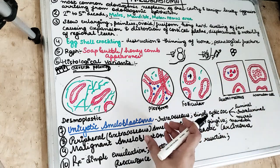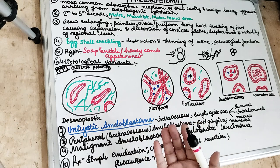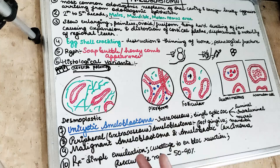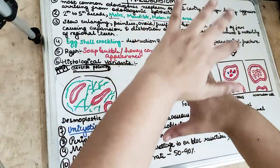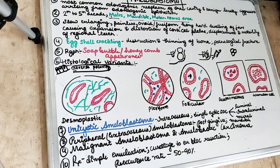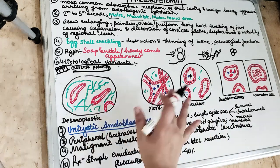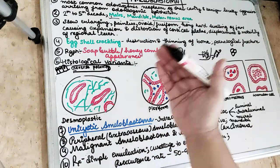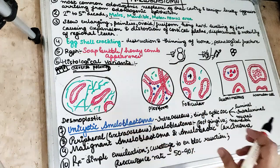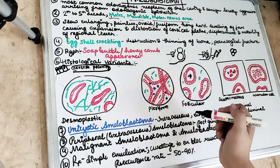In the plexiform pattern, the epithelial cells proliferate and anastomose with each other in a fishnet-like pattern. The neoplastic odontogenic cells proliferate in the form of long continuous anastomosing strands, overlapping each other. Stellate reticulum-like cells are present in between the strands, and the peripheral or basal cells are cuboidal to columnar in shape.